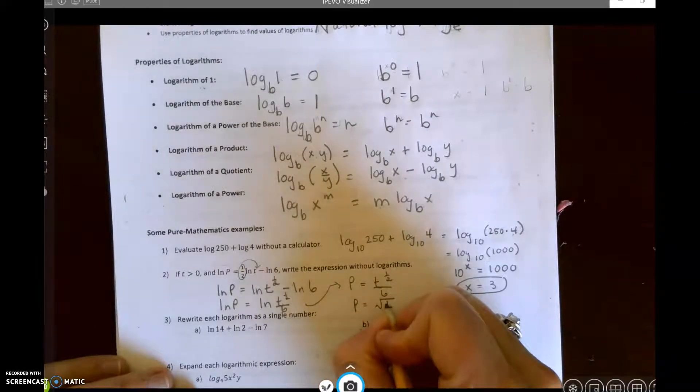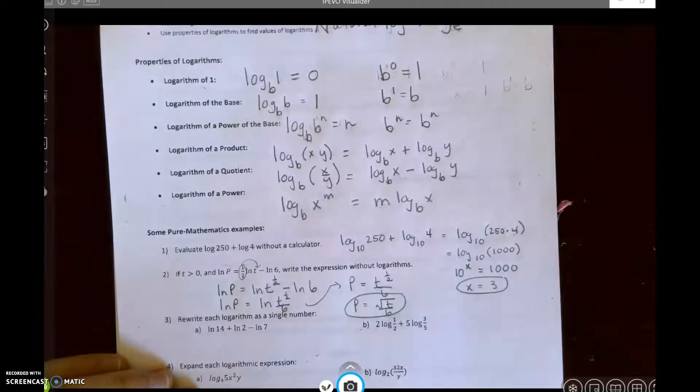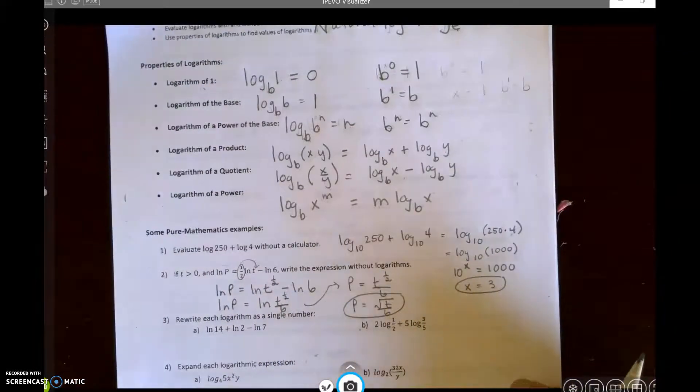Now since it's the natural log of each side, I can then simply just say that p must equal t to the one-half divided by 6. And therefore that is the square root of t divided by 6. And look at that, I wrote it without logarithms.